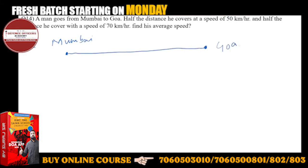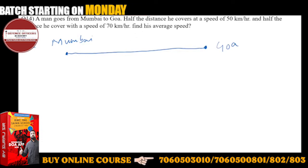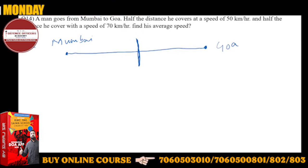And half the distance, see, this is supposed to be half the distance. So half the distance he covers at a speed of—this is speed. This speed is given to you: 50 km per hour.